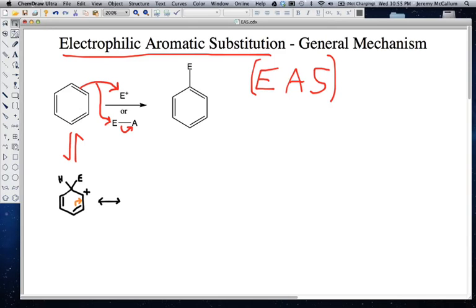So let's draw that resonance structure now. We still have our H bond, carbon to H. We still have our new bond to E. Now we have a double bond here. The other double bond is still on the opposite side. And our carbocation has now moved to the bottom.